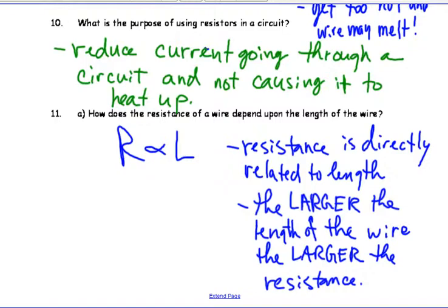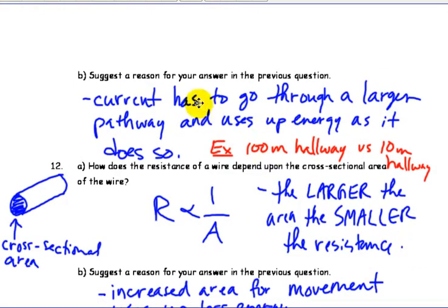Because it makes sense, the electrons have to go a further distance. So the current has to go through a larger pathway and uses up energy as it does so.